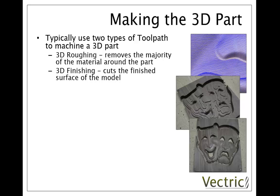The 3D finishing toolpath uses a smaller tool so that we can get the detail, and it uses a very small step over — that's the distance between each path the tool makes. The image on the top right shows the individual lines of that toolpath, and the image at the bottom shows the typical result we get at the end. The smaller the step over the better quality the finish will be, but of course the penalty is the longer it takes to cut.